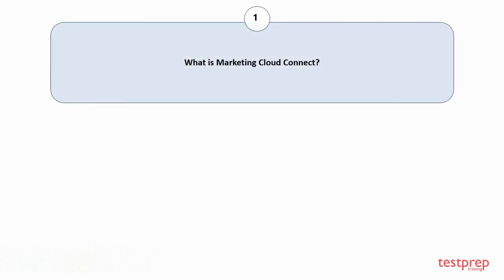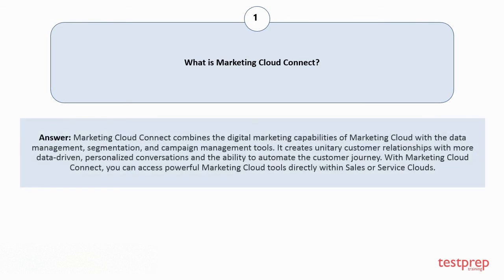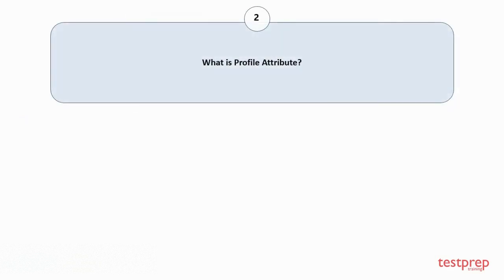Question number one: What is Marketing Cloud Connect? Marketing Cloud Connect combines the digital marketing capabilities of Marketing Cloud with the data management, segmentation, and campaign management tools. It creates unitary customer relationships with more data-driven, personalized conversations and the ability to automate the customer journey. With Marketing Cloud Connect, you can access powerful marketing cloud tools directly within Sales or Service Clouds.